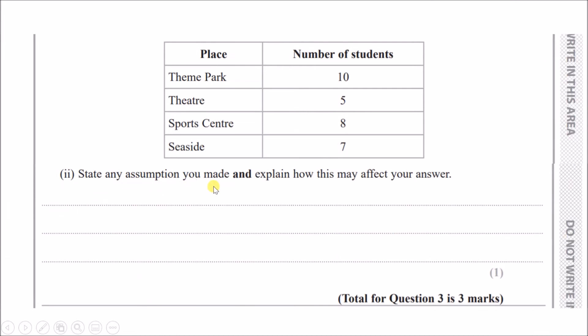State any assumptions you made and explain how this may affect your answer. When they're talking about assumptions, they mean how we got this data. Since we collected data, it should have been random because that's how you get something accurate—the bigger the sample, the more accurate. The number of students chosen is totally random, which makes it fair. This makes the results fair and unbiased, so you get more accurate results.